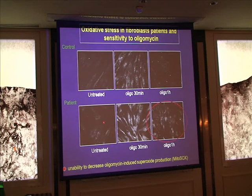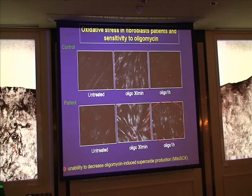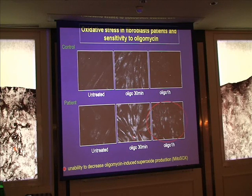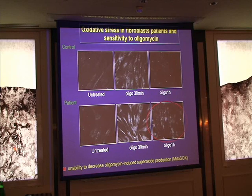When you do the same experiment in patient cells — which have, I repeat, a normal respiratory chain and normal iron-sulfur clusters — and you treat the cell with the oxidative agent, you get a major production of superoxide, even more than in control, and even after a long time you still have this superoxide in the cells. This was the first demonstration that the cells were unable to cope with superoxide due to frataxin depletion.